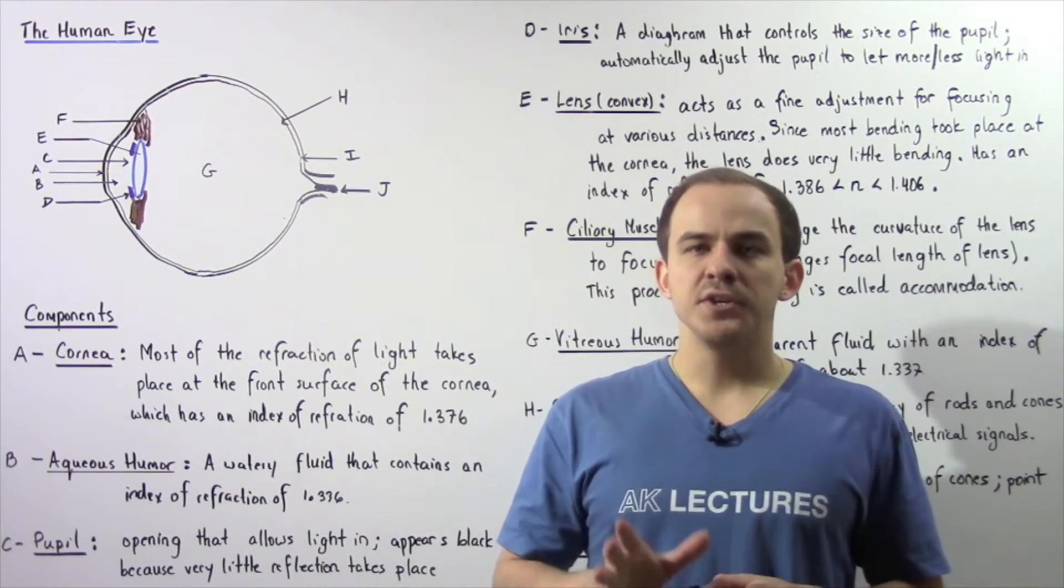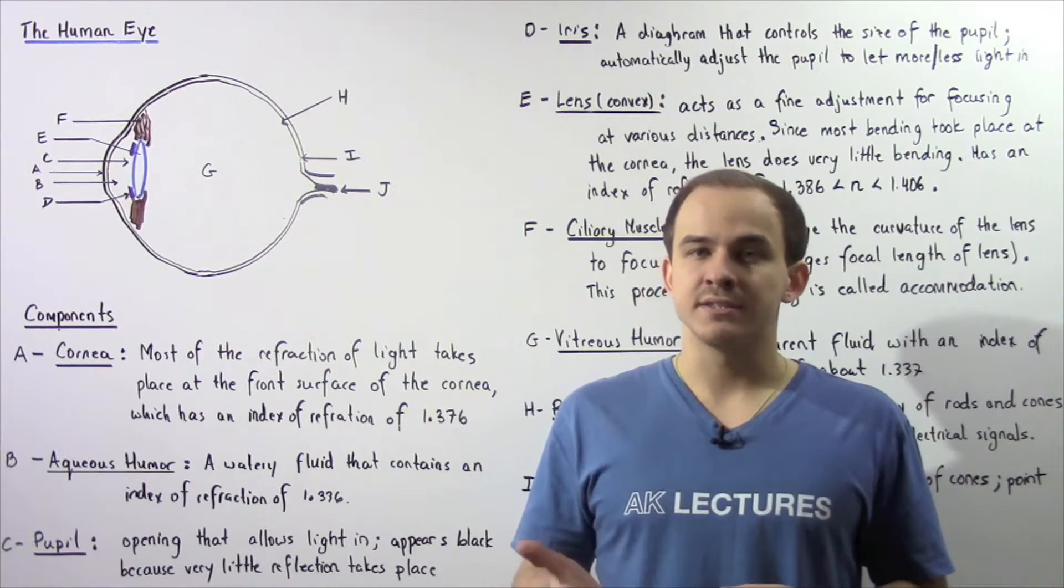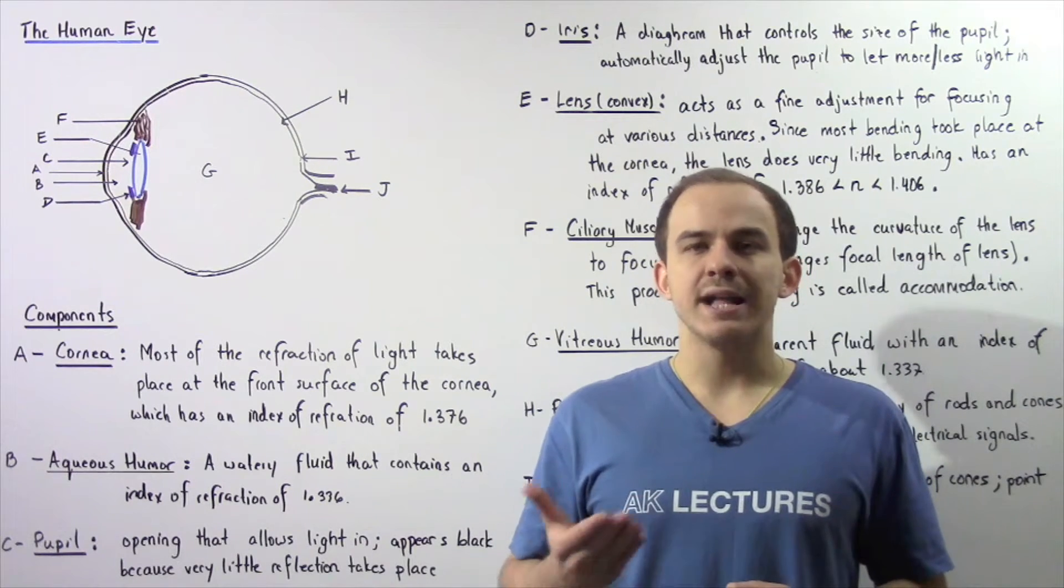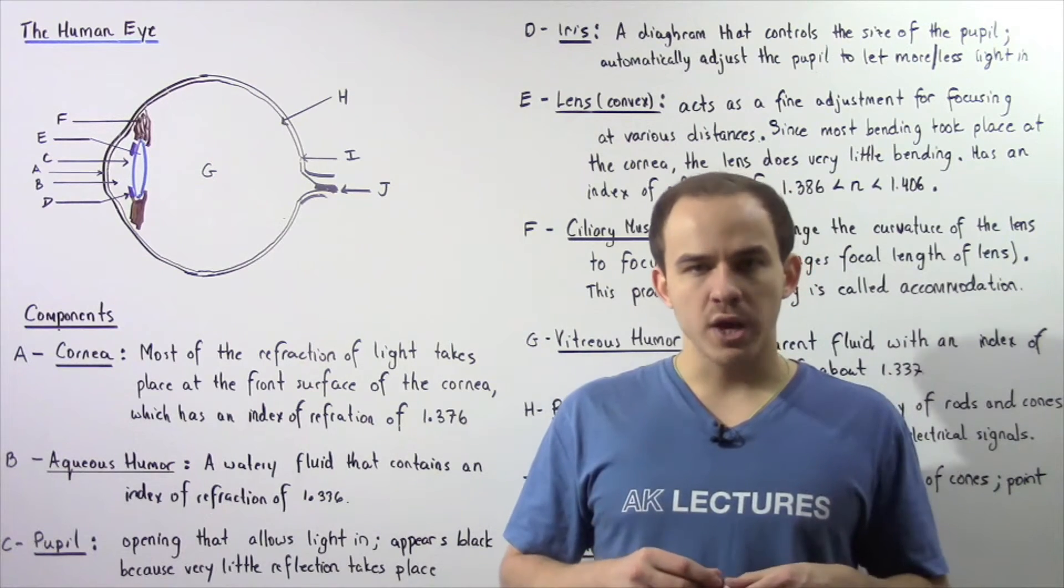The human eye is a very important and sophisticated organ. It essentially detects light and transforms that light into electrical signals, which are then analyzed by the brain.